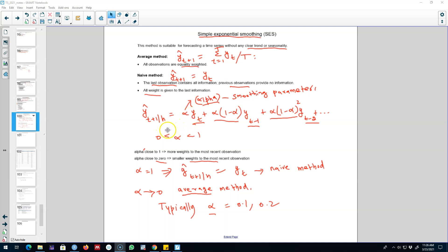What we do in simple exponential smoothing method is we control for how much weight we want to assign to each observation, and the weights depend on the value of alpha, which is between 0 and 1.